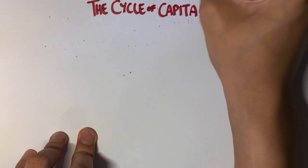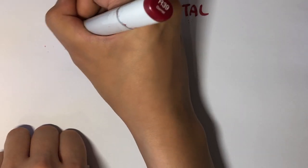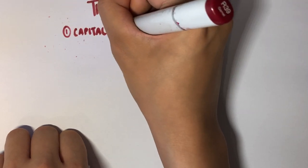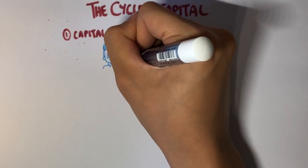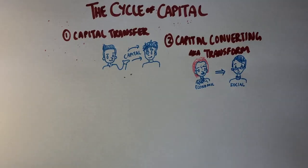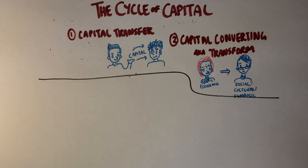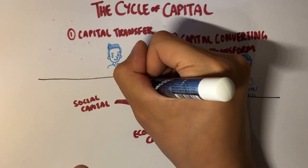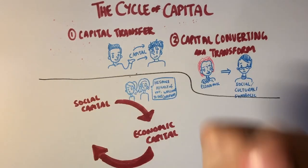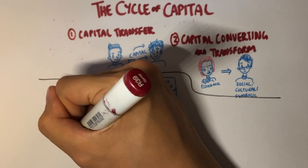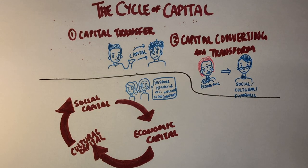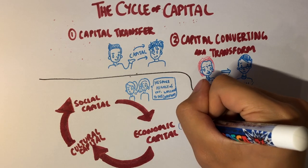Now we're going to move on to the cycle of capital. The cycle of capital is a process that underpins every society, and it involves: one, capital being transferred from one person to another; and two, capital being converted from one species to another. The relationship between the species of capital can be summarized as follows: social capital provides you with opportunities to obtain economic capital, which can then be reinvested in cultural capital, which can help you obtain social capital. If you look at the diagram I'm drawing, you can give the example of someone getting a job through connections — perhaps a good referral that led to them being hired. This shows social capital being converted and transferred into economic capital through their income.